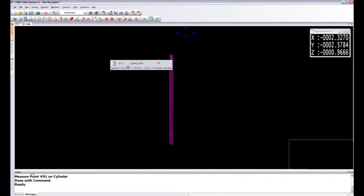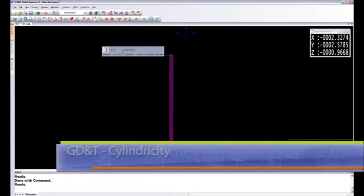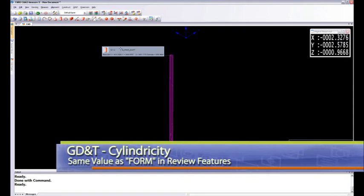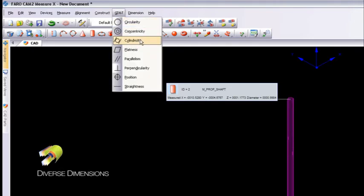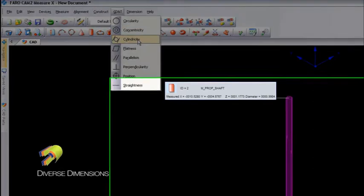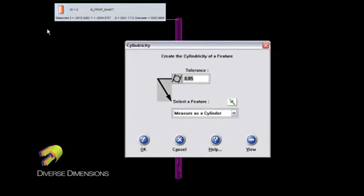Now I'll move my label over just a little bit. The form that we saw was the 2.6 thousandths of an inch. That is known as cylindricity in GD&T language. But what I'd like to do is show you how we can put that into a report. If I click on the GD&T pull down menu and then go to this down arrow here, there it is. Cylindricity is right there. I'll click on that and it says here create the cylindricity of a feature.